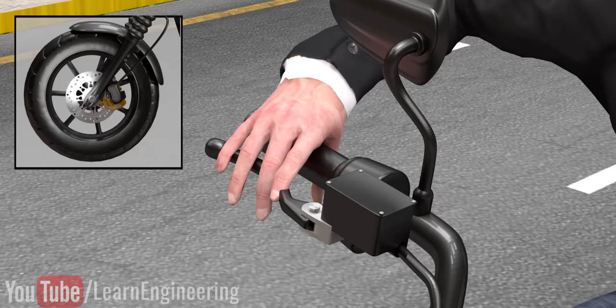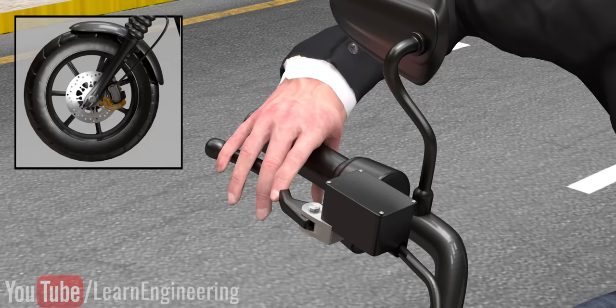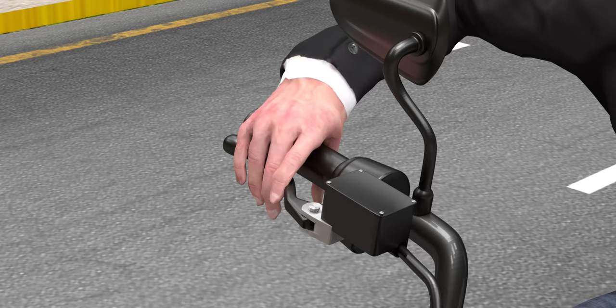You might be wondering how the small force produced by your hand on the brake lever is sufficient enough to stop a motorcycle wheel. Engineers achieved it by clever use of Pascal's Law.